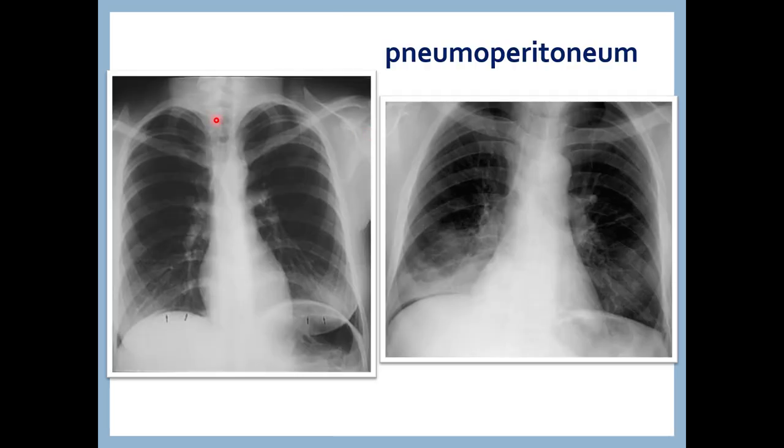Normally there is no air lucency under the diaphragm at all. If we see air lucency or blackness under the diaphragm, it is pathological — it is pneumoperitoneum. Multiple images here all demonstrate pneumoperitoneum — this is a very important slide for the exam.